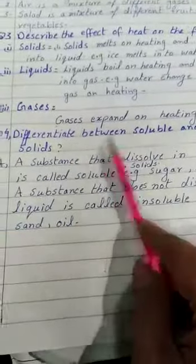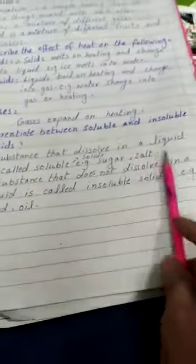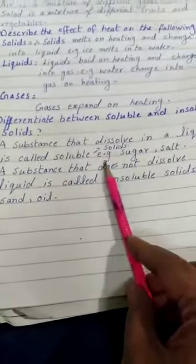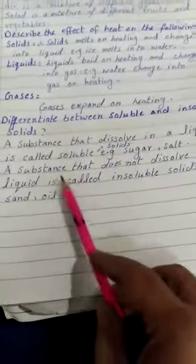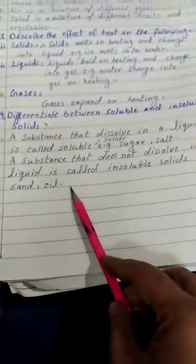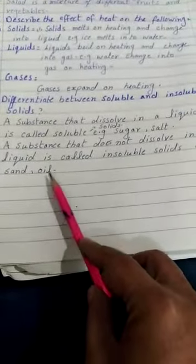Differentiate between soluble and insoluble solids. A substance that dissolves in a liquid is called soluble solids. For example, sugar and salt. A substance that does not dissolve in a liquid is called insoluble solids, for example, sand and oil.